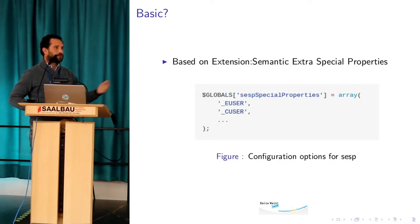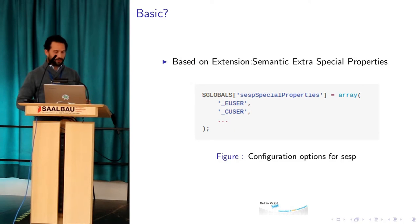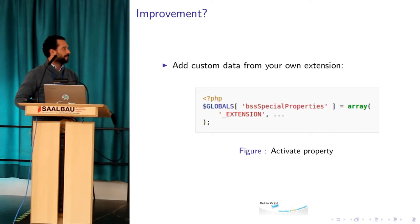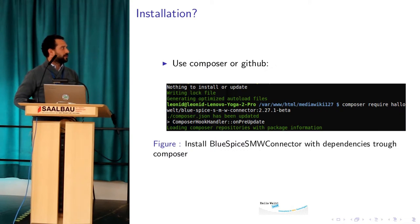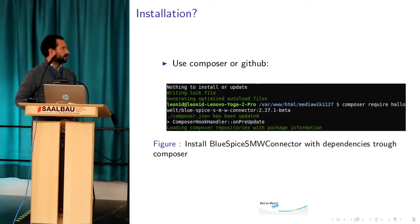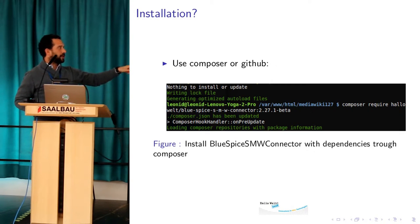For that I wanted to make something like this — it's pretty similar, just another name, and you make your extension data available. First you have to install SMD Connector; it's also available in Composer so you can just type the name and it will be installed and available.